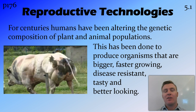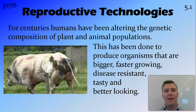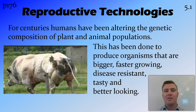Reproductive technologies — now I say technologies, but this is something that has been happening for thousands of years in human history. Ever since we stopped being hunter-gatherers and started cultivating crops of barley to make beer, we've been trying to make that barley bigger with more seeds. This has been done to a whole heap of different organisms to alter the genetic composition of the population. Some of the reasons we do this is to produce organisms that are bigger, faster growing, disease resistant, tasty, and better looking.